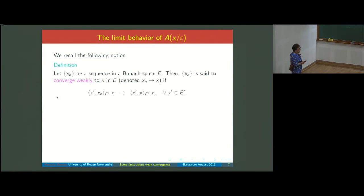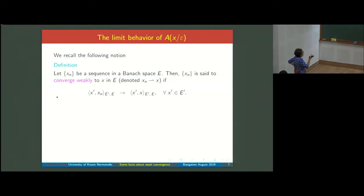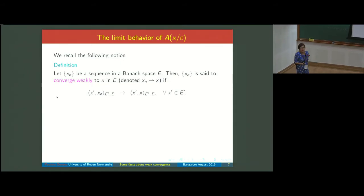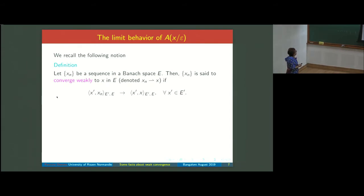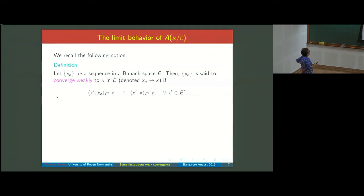Some facts about weak convergence: a sequence in a Banach space X converges weakly to x, written x_n ⇀ x, if ⟨x', x_n⟩ → ⟨x', x⟩ for every x' in X'. In L^p with p = 2, this becomes: f_n ⇀ f if ∫ f_n g → ∫ f g for every g in L2. Working with integrals rather than duality is much better since we can apply many integral theorems.